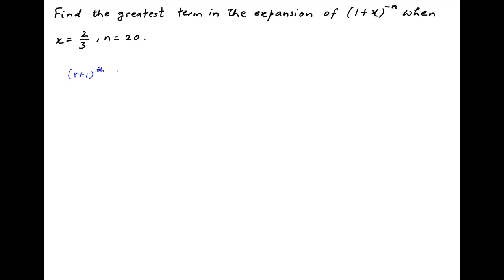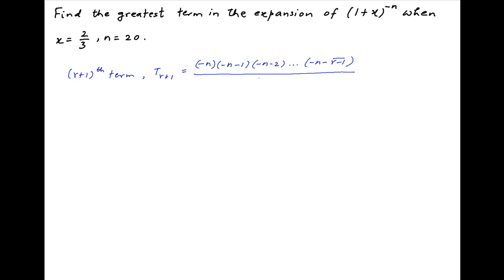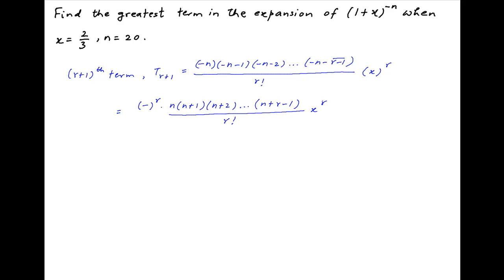The (r+1)th term in the expansion of (1+x)^(-n) is equal to minus n times (minus n minus 1) times (minus n minus 2) and so on till (minus n minus (r-1)), divided by r factorial, multiplied by x raised to the power r. Taking the minus sign common from all terms in the numerator, we get minus raised to the power r times n(n+1)(n+2)...up to (n+r-1), divided by r factorial, multiplied by x^r.